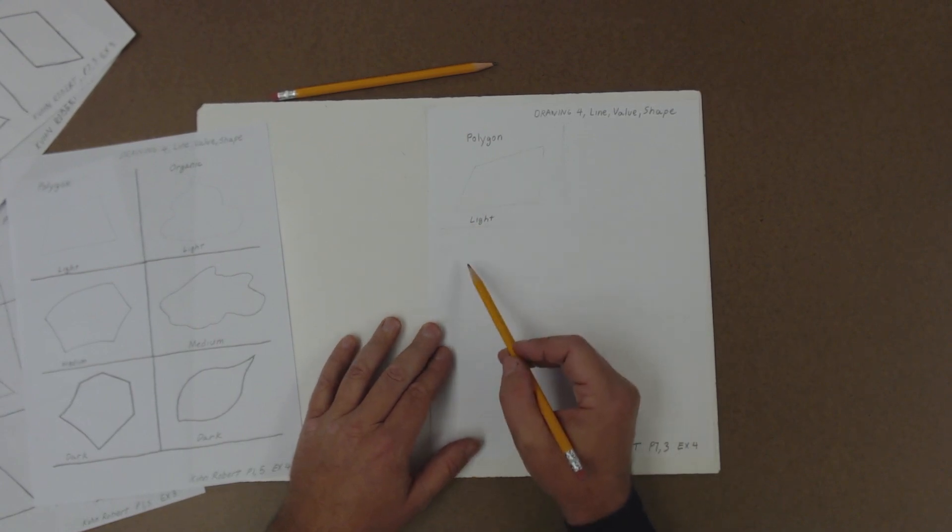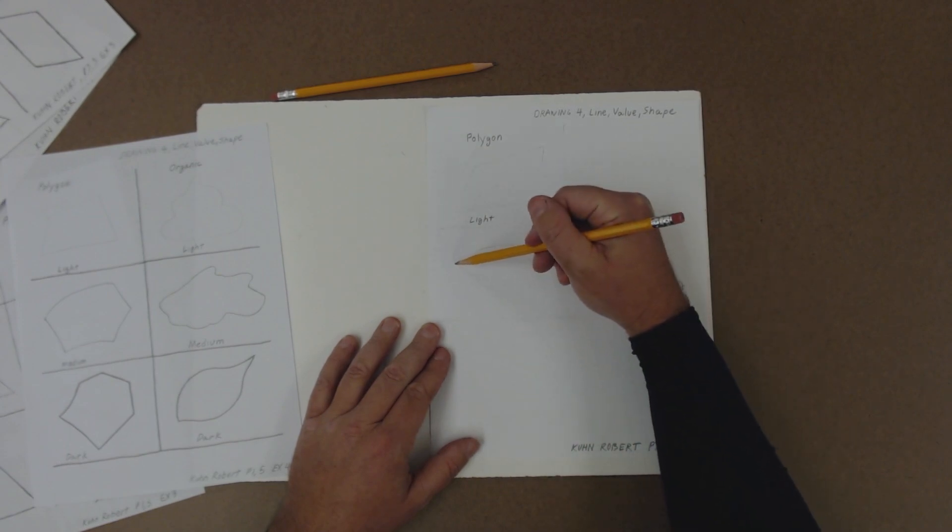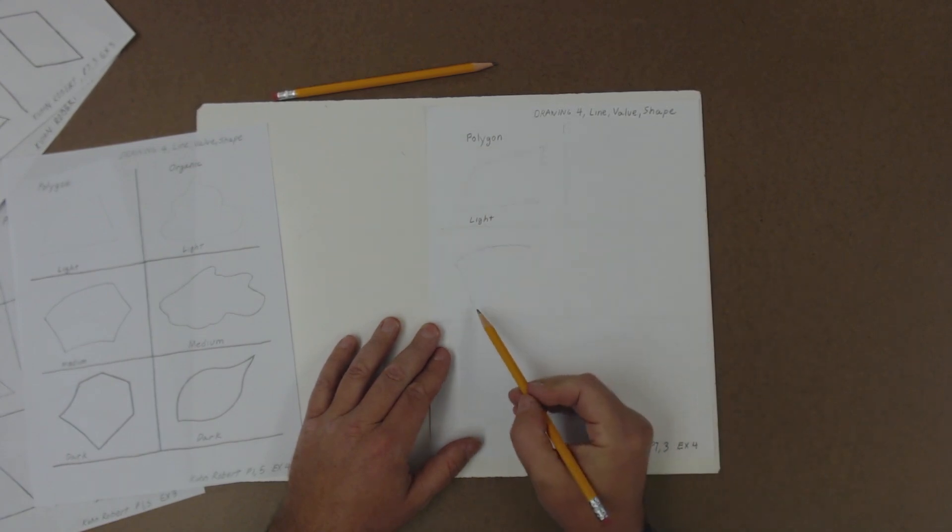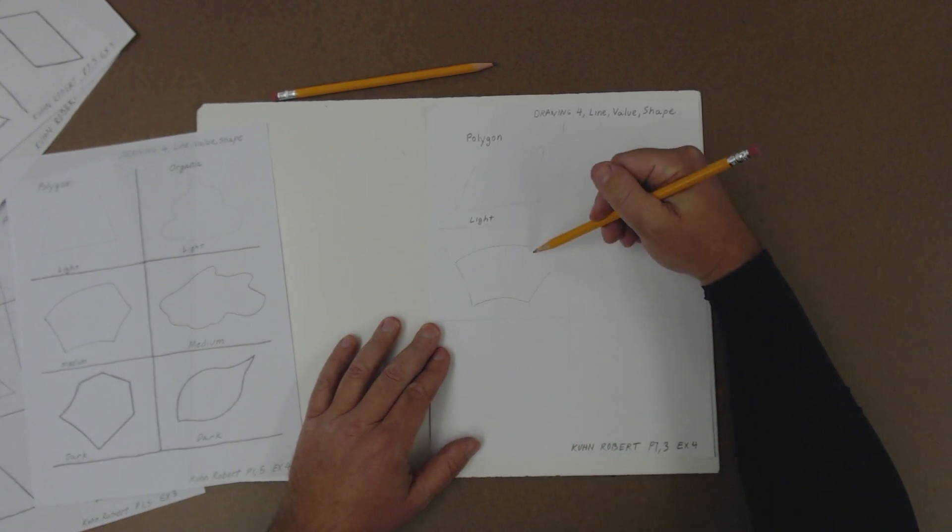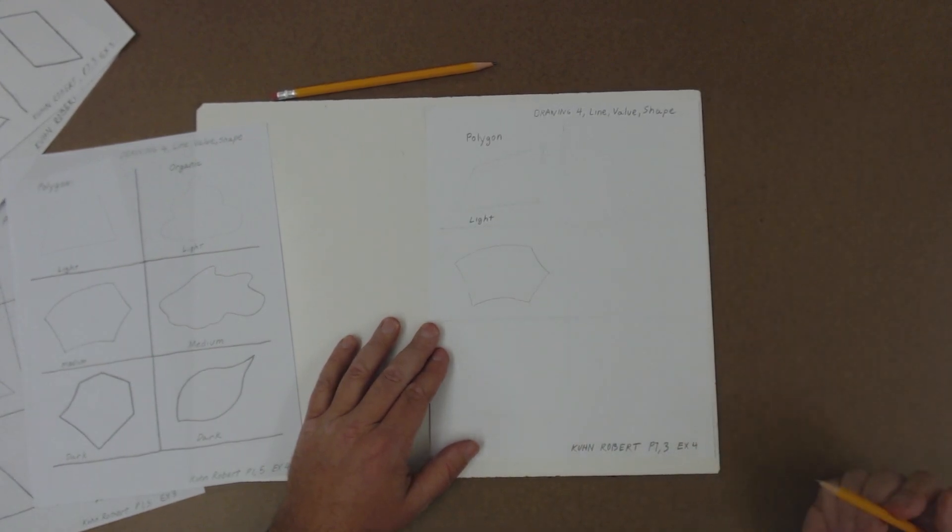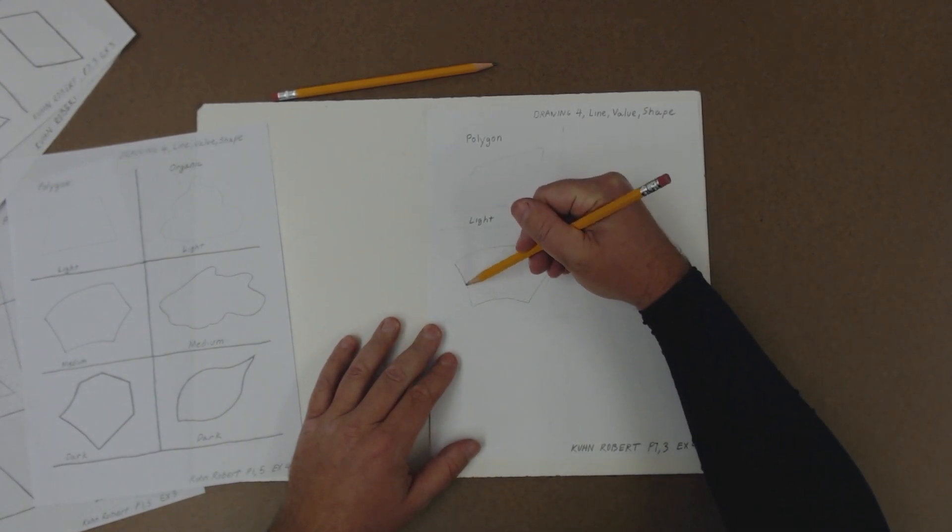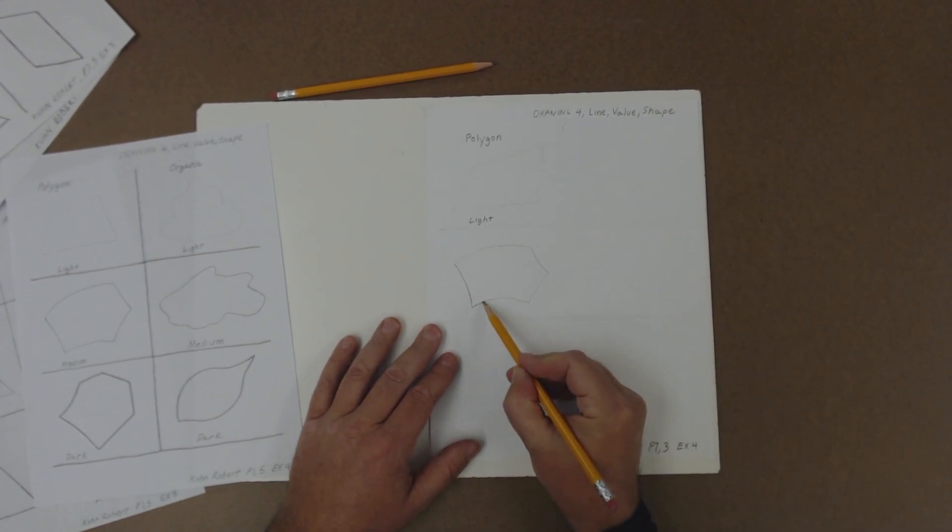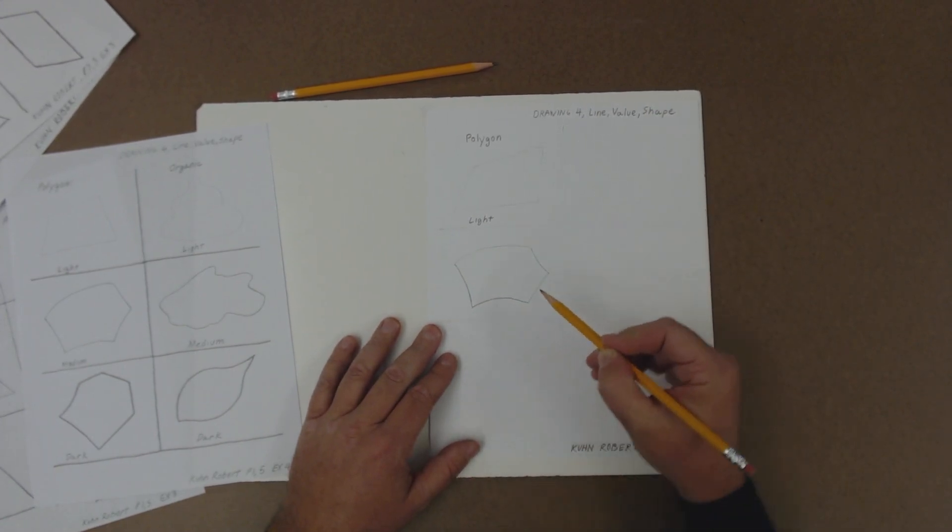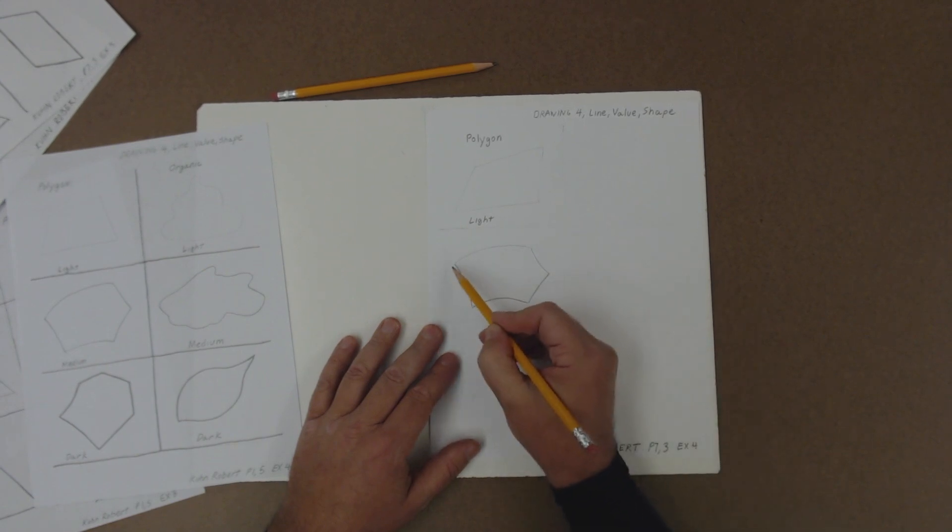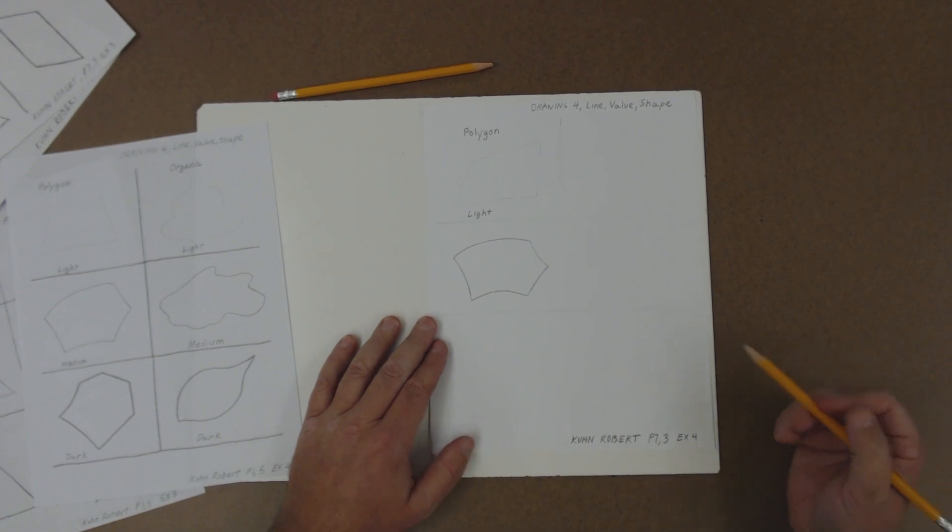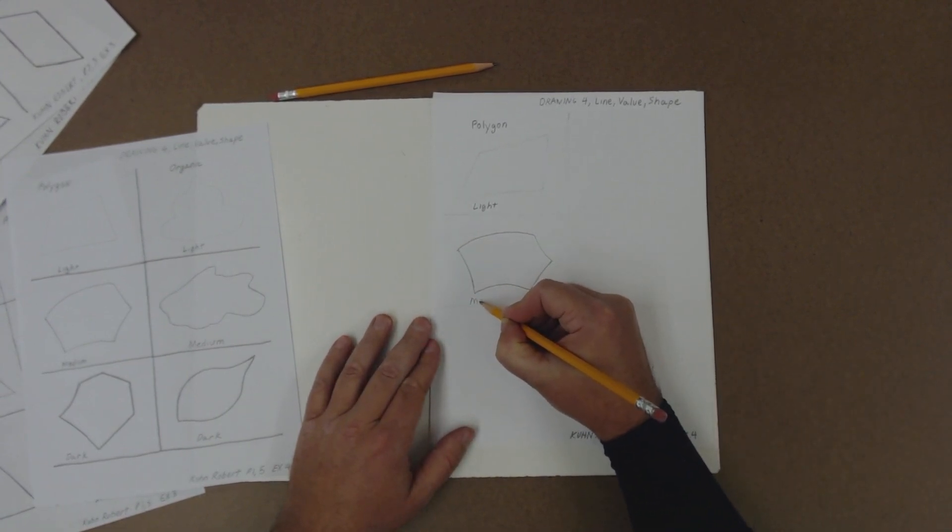A polygon could have curved sides to it. So let's say, what if I did this one? This has got a curve here and maybe a curve right here. And your polygons can be totally different than mine. And it could have more than four sides. It could have an undefined number of sides there. So that's my medium. Let's make it a little bit more medium than that.